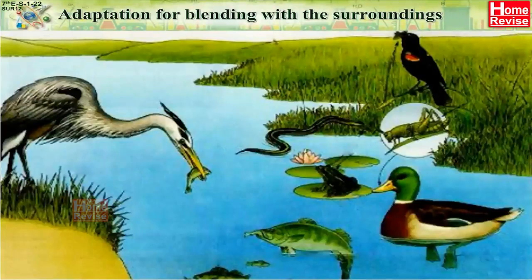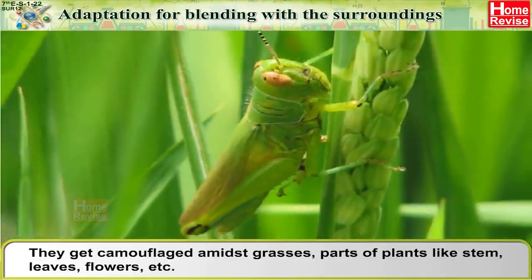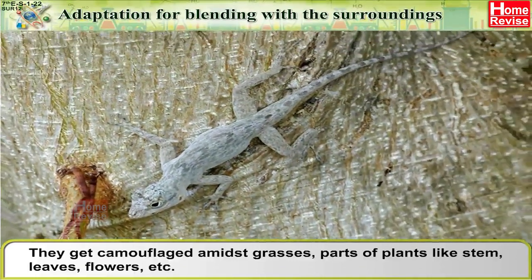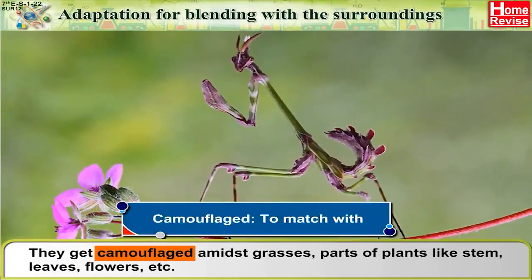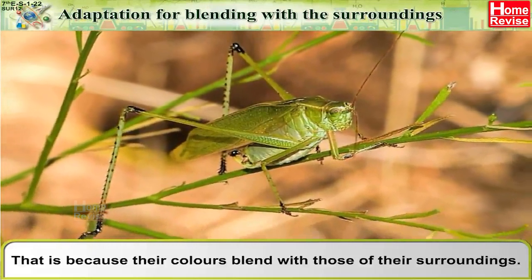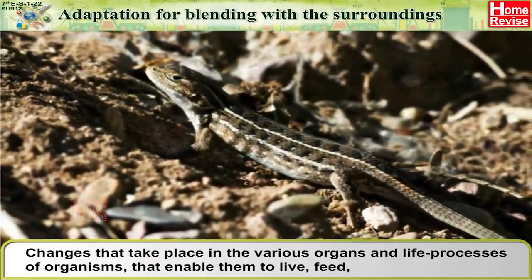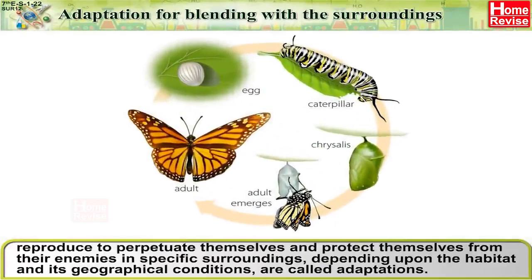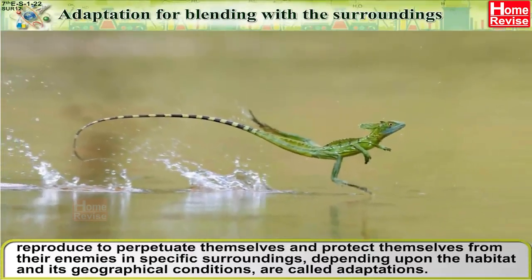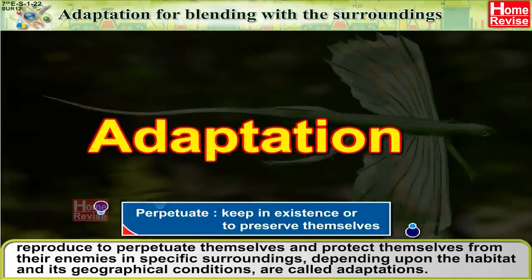Adaptation for Blending with Surroundings: We cannot easily spot colourful butterflies, lizards, and grasshoppers. They get camouflaged amidst grasses and parts of plants like stem, leaves, and flowers, because their colours blend with those of their surroundings. Changes that take place in the various organs and life processes of organisms — enabling them to live, feed, reproduce, protect themselves from enemies, and perpetuate themselves in specific surroundings — depending upon the habitat and its geographical conditions, are called adaptations.